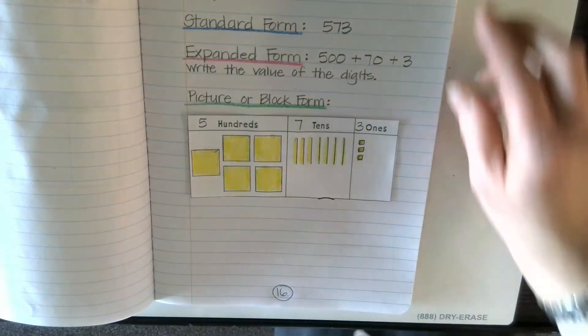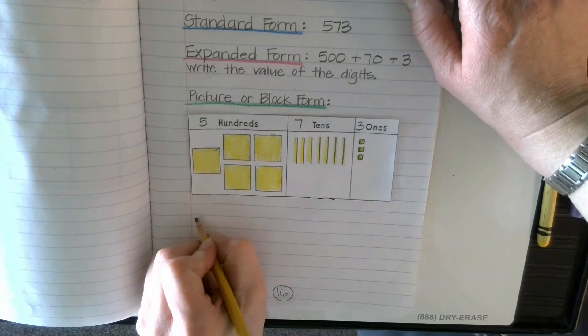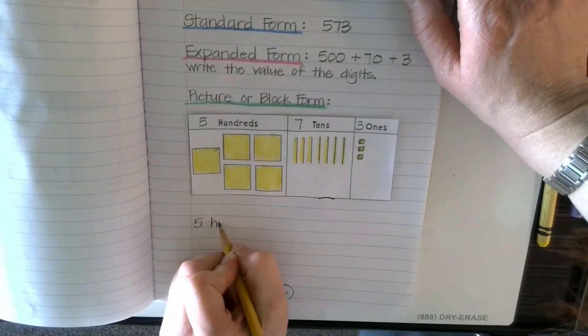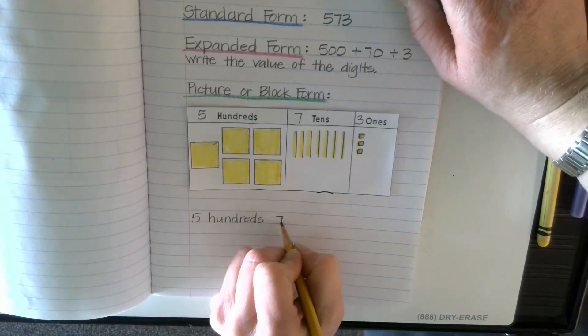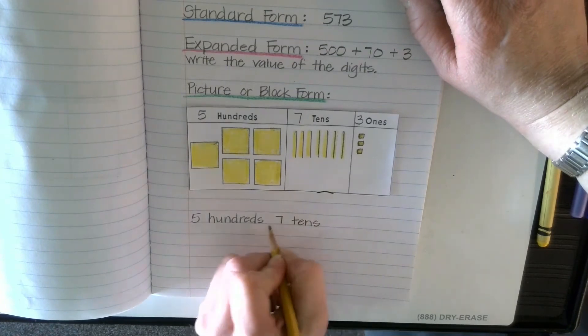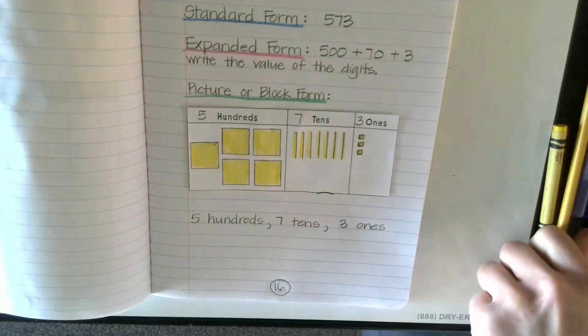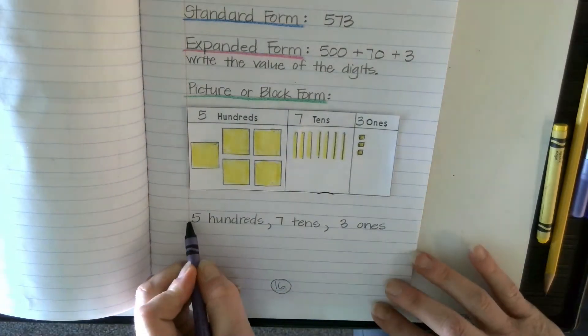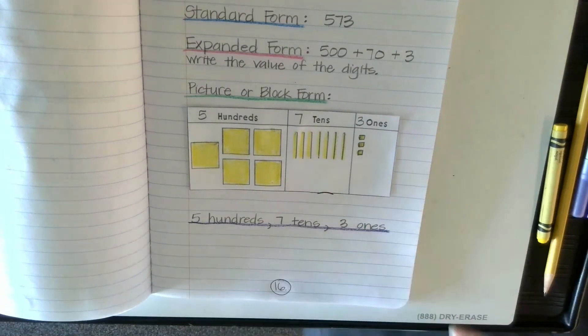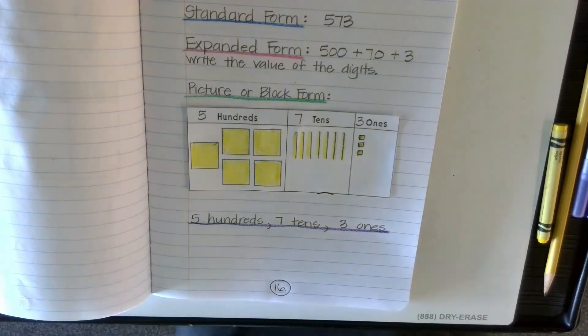Then below that, I'm going to write this in hundreds, tens, and ones. And we already talked about that a little, but I would just write 5 hundreds, 7 tens, put a comma between these, and 3 ones. Underline that in, I don't know, purple maybe, just a light line of purple.